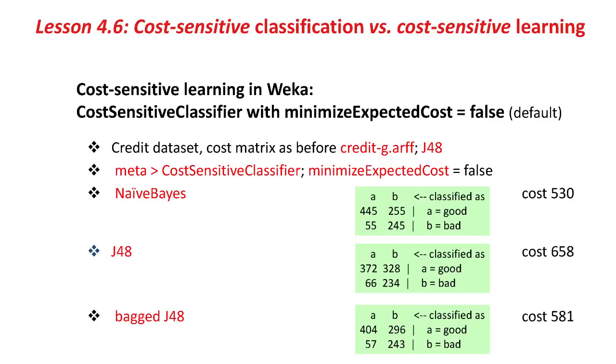In general, these are a little bit better. Certainly for J48, the results of cost-sensitive learning are a little bit better than the results of cost-sensitive classification that we looked at before.